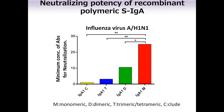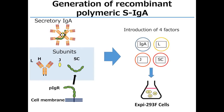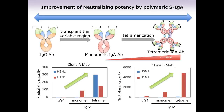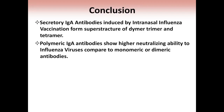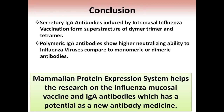In conclusion, we can produce milligram-order quantities of antibodies in 200 milliliter cell cultures. The secretory IgA antibodies induced by intranasal influenza vaccination form superstructures of dimer, trimer, and tetramer. The polymeric IgA antibodies show higher neutralizing ability against influenza virus compared to monomeric or dimeric antibodies. The mammalian protein expression system helps advance research on influenza mucosal vaccines and IgA antibodies, which have potential as new antibody medicines.